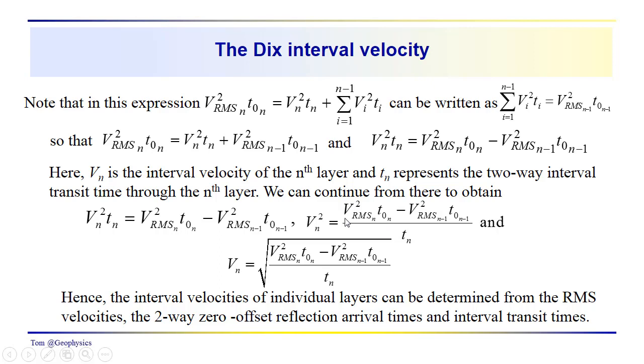So in general then, we would get, just simplifying the notation here, V_n squared, just dividing both sides by t_n, is going to equal this ratio. So we have these two terms over here, we divide by t_n, take the square root of that, and then we get the interval velocity for the nth layer.